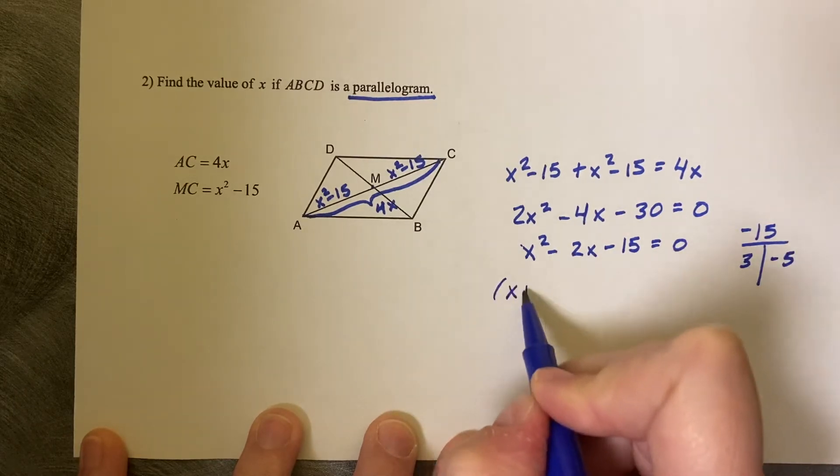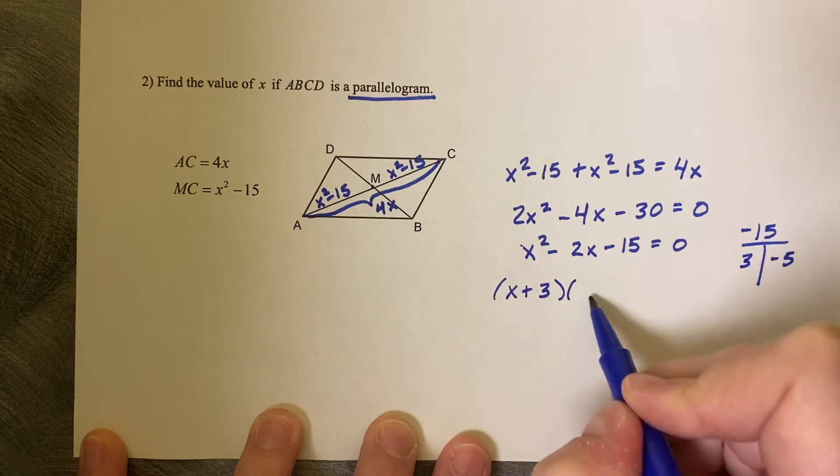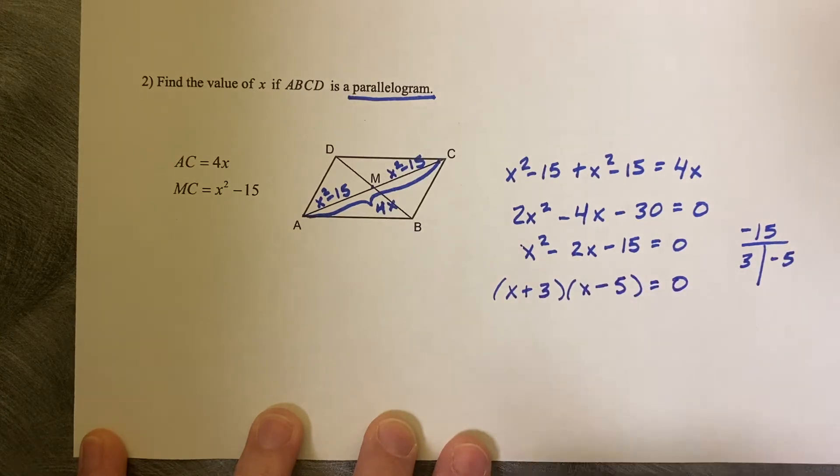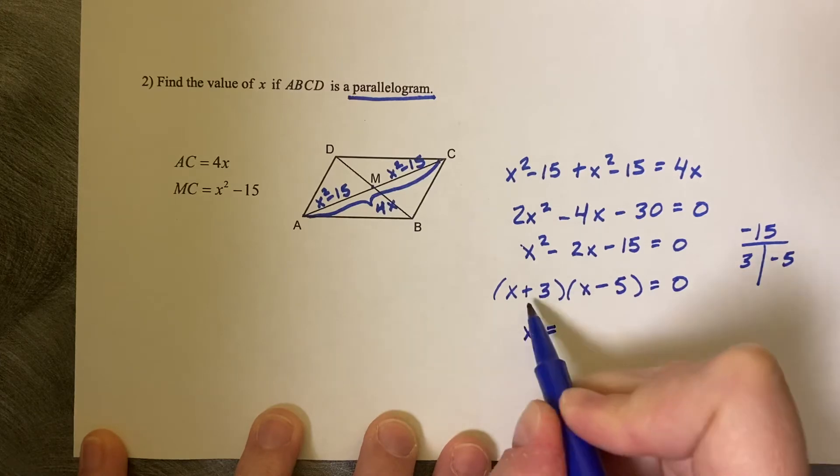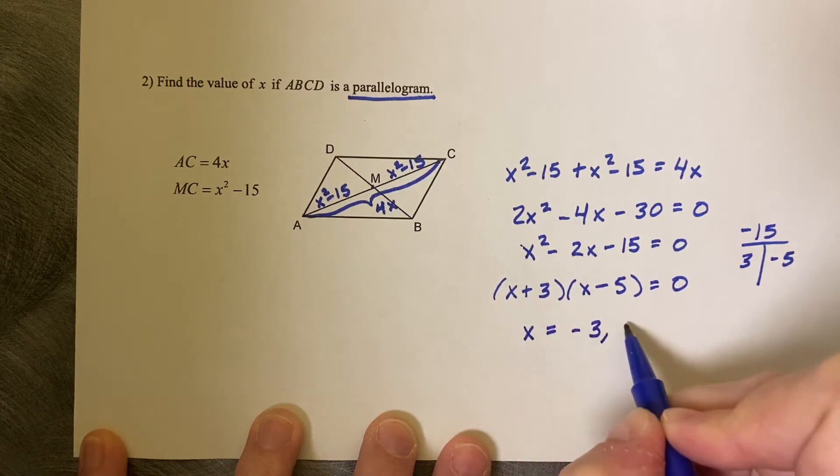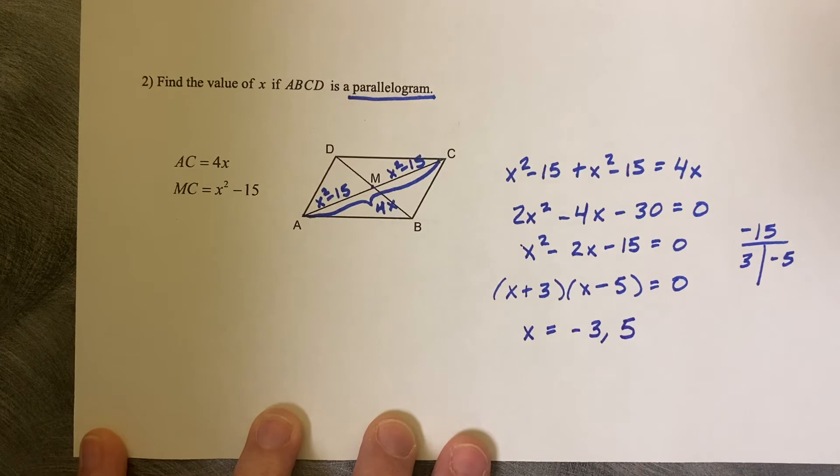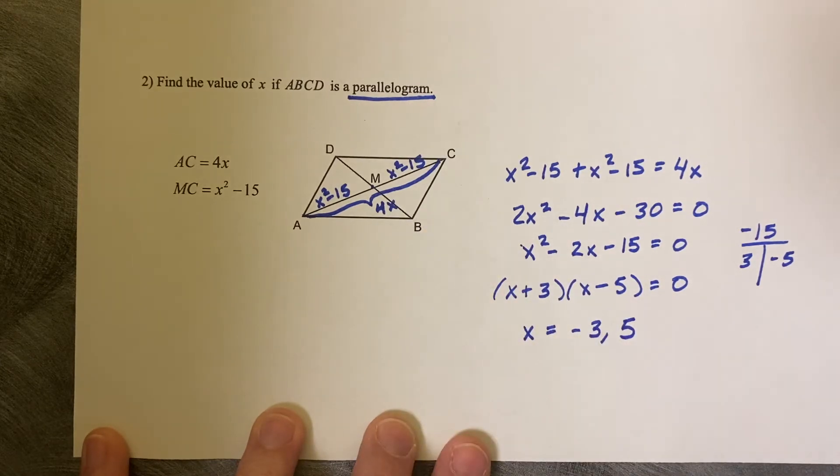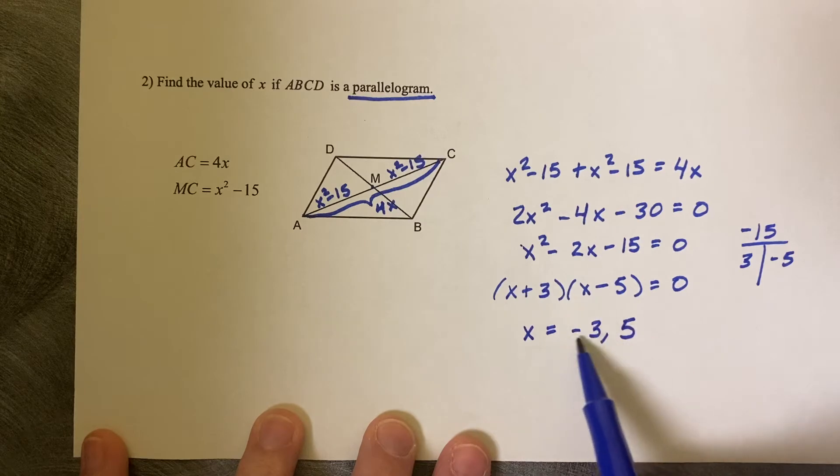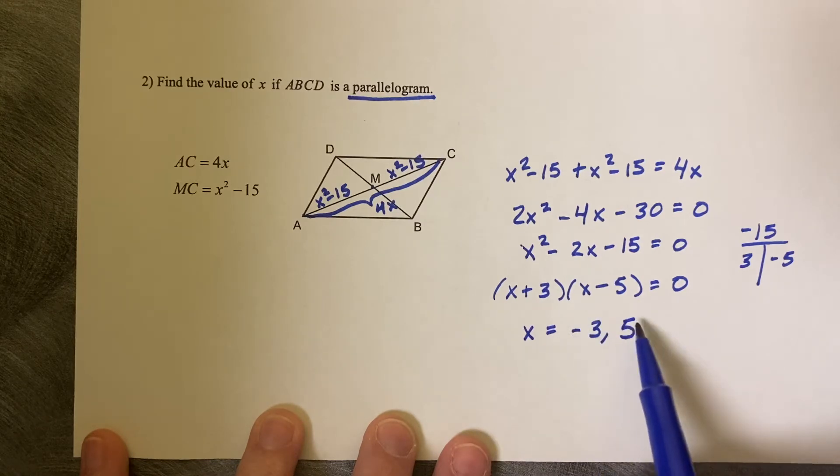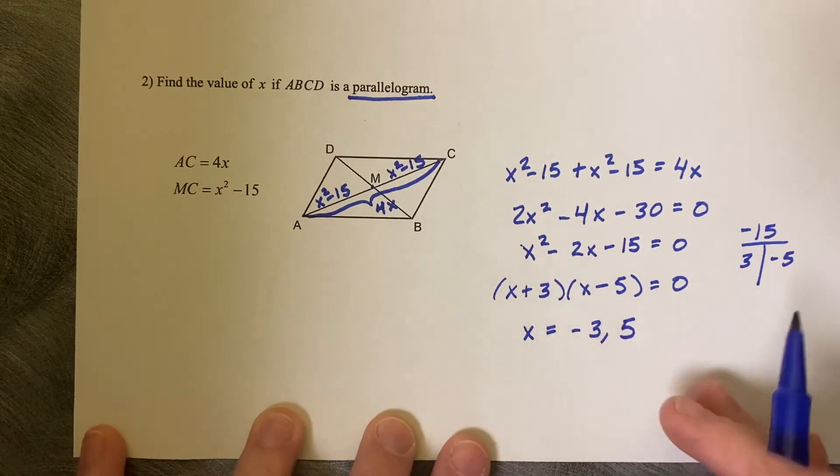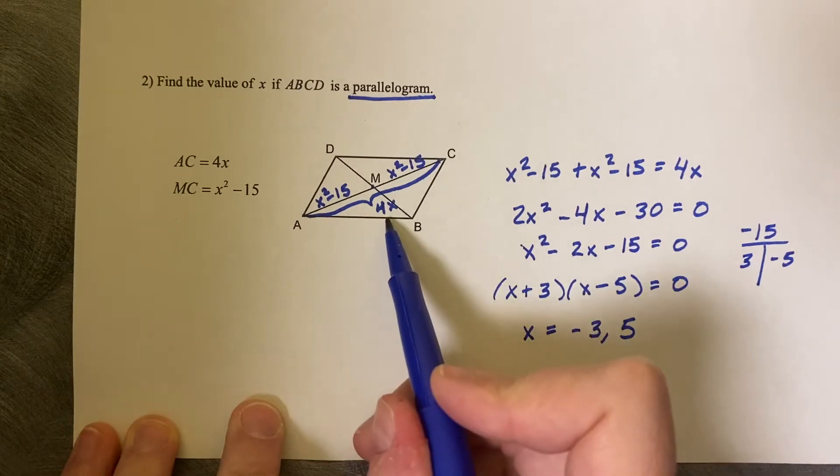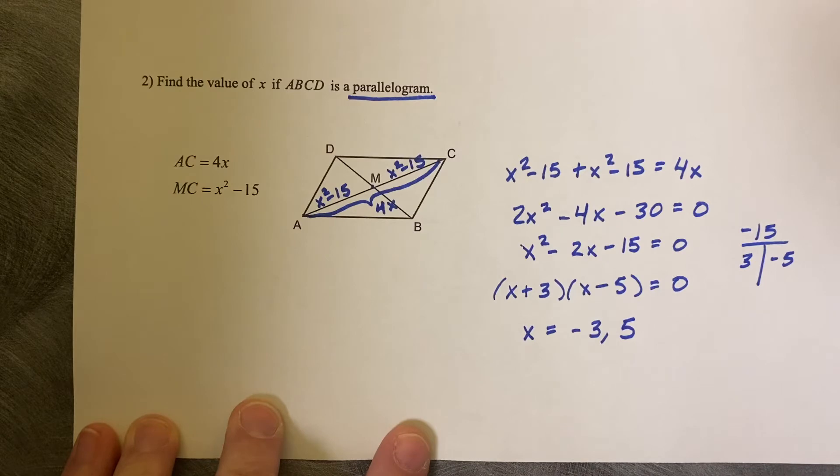So then we've got X plus 3, X minus 5, equals zero. So then our two solutions are negative 3 and positive 5. But you always want to check when it's in terms of a context that has length, because you're not always sure if either one of these are going to create positive lengths. So the best way to check it is to plug it back into one of the lengths and see if it makes sense.